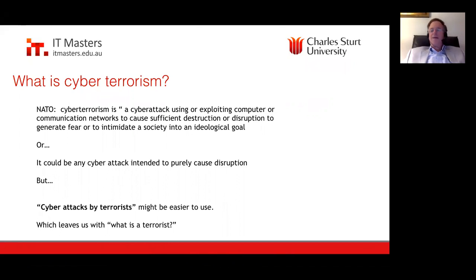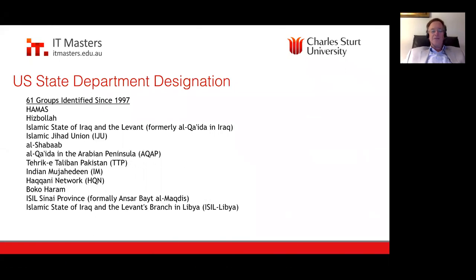Anonymous taking on banks is also probably not terrorism. A definition you could use is cyberattacks by terrorists — which leaves us with the question of what is a terrorist. Luckily, we have some designations from the U.S. State Department. Since about 1997, the State Department has designated 61 separate groups as terrorist organizations.